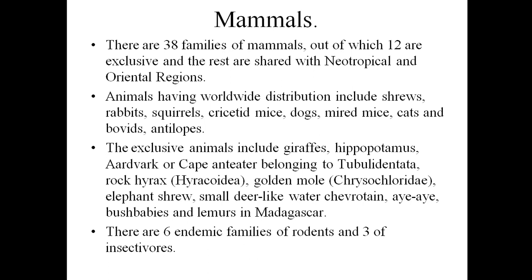Coming to the fauna of this region, starting with mammals: there are 38 families of mammals. Out of these, 12 are exclusive — that is, endemic — and the rest are shared with the Neotropical and Oriental regions. That means 12 out of 38 are endemic, roughly one-third of the mammalian population observed in this African realm. The remaining 26 families are also found in the Neotropical and Oriental regions. This realm also has examples of animals with worldwide distribution.